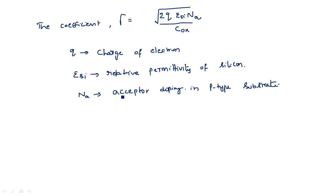When we consider the effect of the threshold voltage change on the characteristics of VGS versus ID, the characteristic curve will shift.